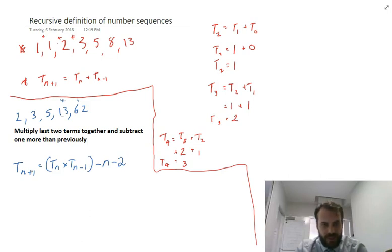Okay, so there's a formula, a recursive formula for this one. T_n+1 is equal to the previous term times the term before that minus the number of the term you're looking for, minus 2.